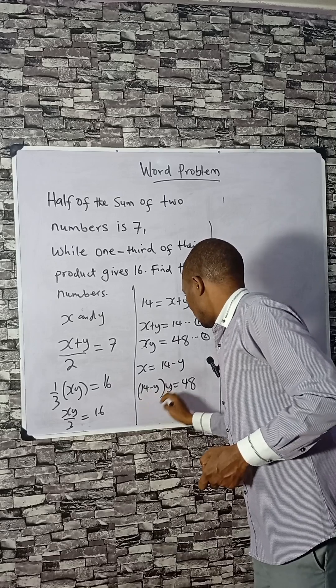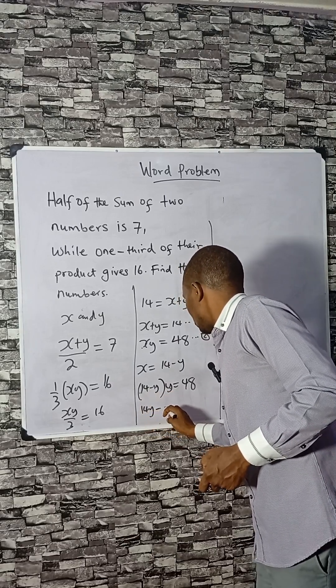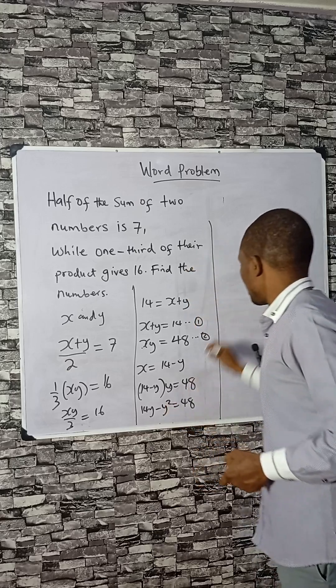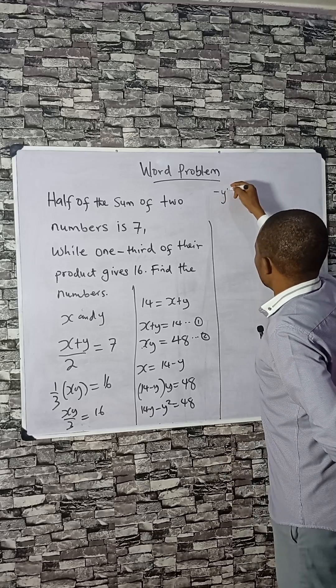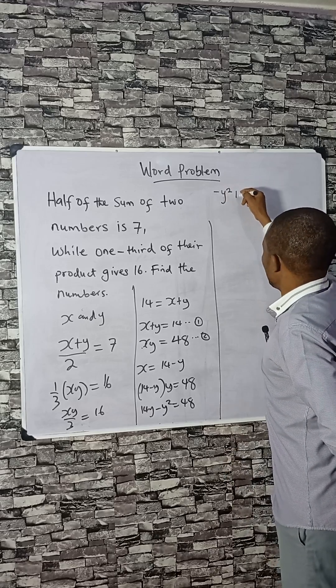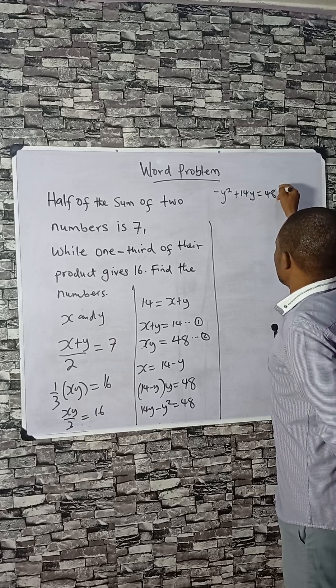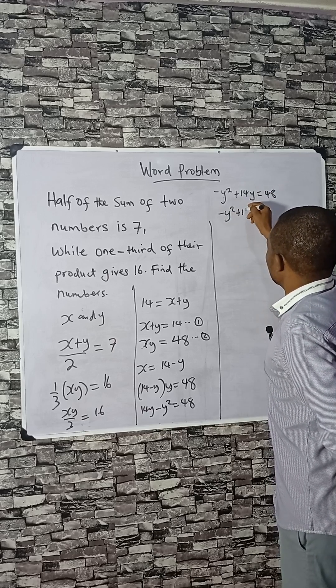Now, this time this gives you 14y, this gives you minus y squared, and 48. We can solve this by factorizing. Minus y squared plus 14y minus 48.